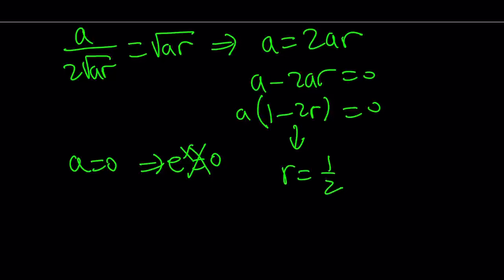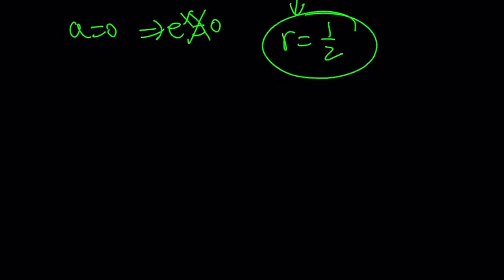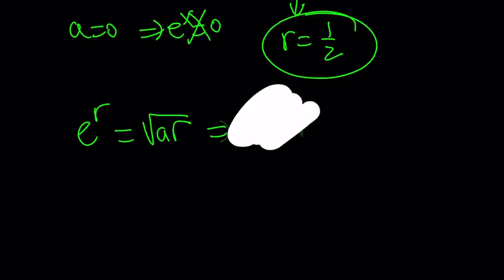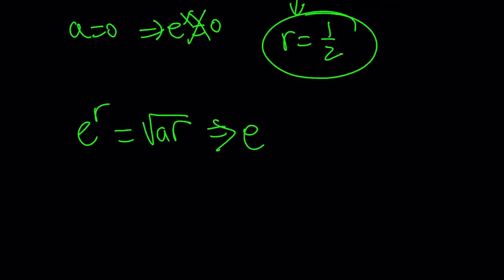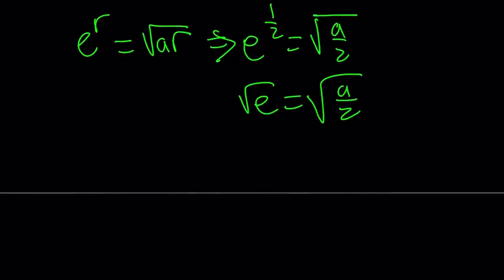So r equals one-half makes the two curves tangent. We found r, now we need a. Using the equation e to the r equals square root of ar and replacing r with one-half: e to the one-half equals square root of a times one-half, which is square root of a over two. Since e to the one-half is the same as square root of e, we have square roots on both sides. Squaring both sides gives a over 2 equals e, where e is Euler's number, approximately 2.7. Multiplying both sides by 2 gives a equals 2e.